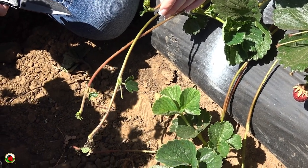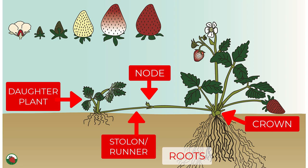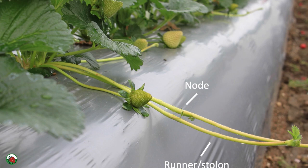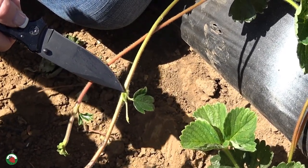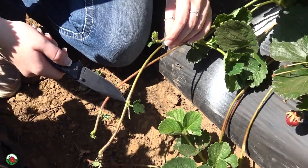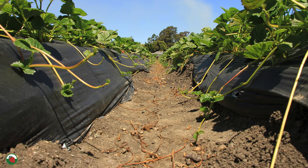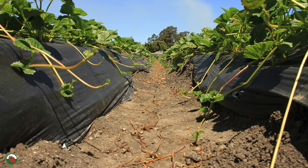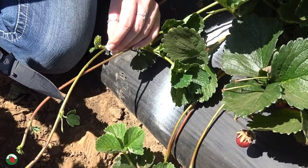Strawberries propagate themselves via achenes or vegetatively via stolons or runners. Stolons or runners are long stems with one or more nodes, where the plant will put down roots and form a daughter plant. After the mother plant puts out several daughter plants, you end up with a strawberry patch — found in natural habitats or in your garden if you let the plants spread this way. Commercial strawberry growers will trim runners to prevent plants from putting precious resources into this form of growth. For a fruit grower, it's better for the plant to use its resources to produce fruit, not daughter plants, so fruit growers will remove runners.